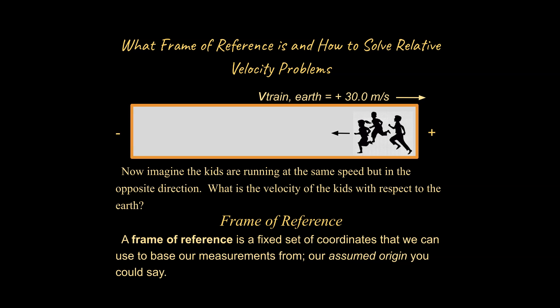Well, hopefully you're able to come up with the velocity of the kids with respect to the Earth is going to be 29 meters per second to the right. So from the train's point of view, they're only traveling 1 meter per second to the left.